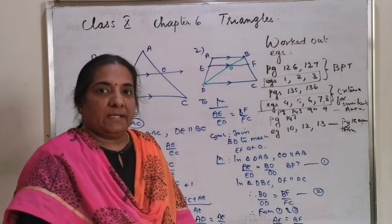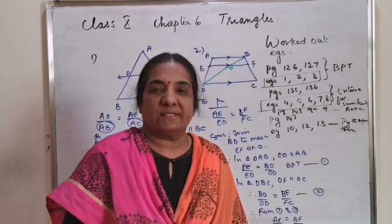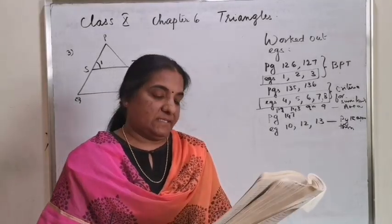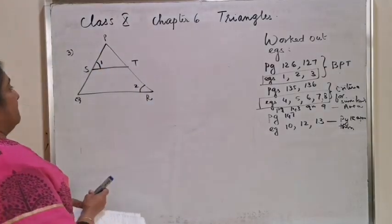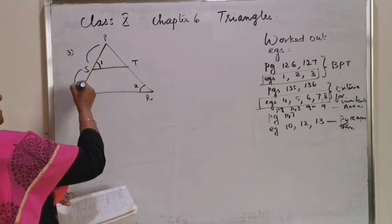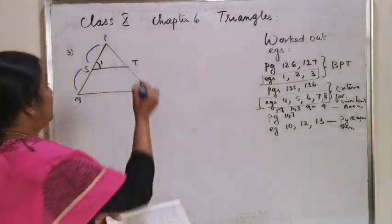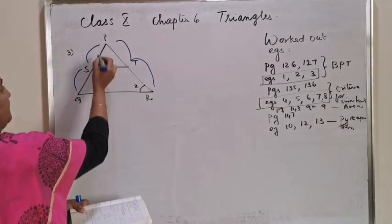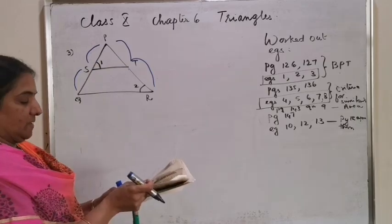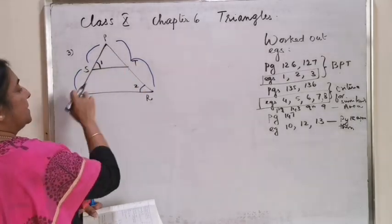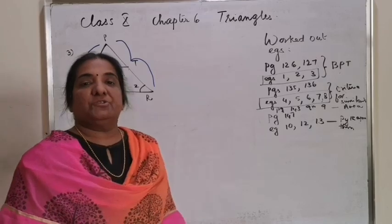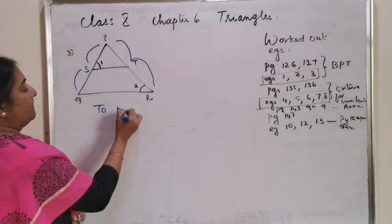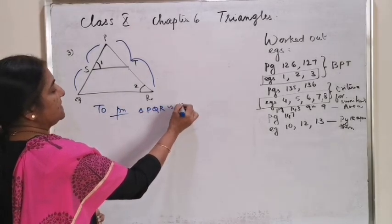These are all two-mark questions. Example 3: In the figure, PS by SQ is equal to PT by TR — it is given. Angle PST equals angle PRQ. What we have to prove is that triangle PQR is isosceles. A triangle is isosceles when its base angles are equal. The base angles of triangle PQR are angle Q and angle R. Angle R is already given as angle 2, so we have to prove angle 2 and angle 3 are equal.